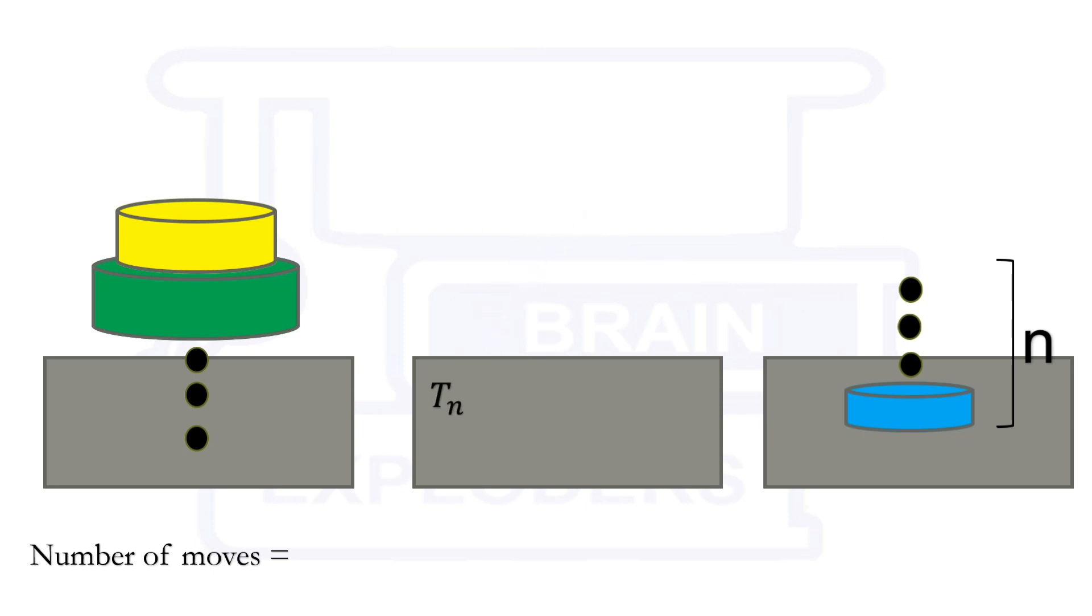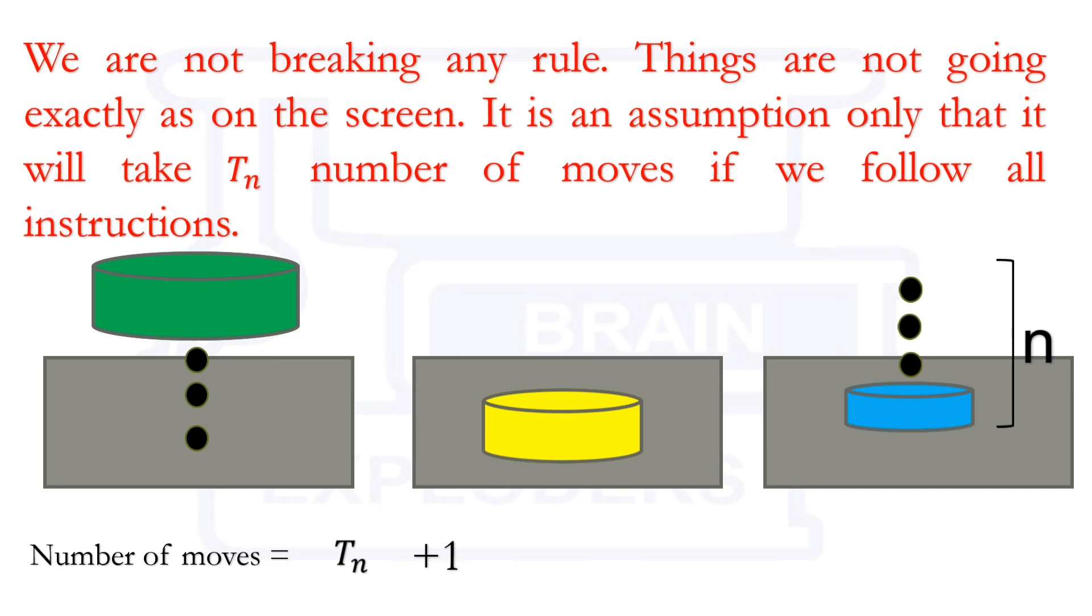One thing should be clear here that we are not breaking any rule here. You may think that we are taking n disks at a time and moving it but this is not so. Here, we have assumed that in this stack of n disks, if we take only one disk at a time and keep going on by following all the rules, then the number of moves will be Tn. This is an assumption. We are not doing exactly the thing which is shown on the screen.